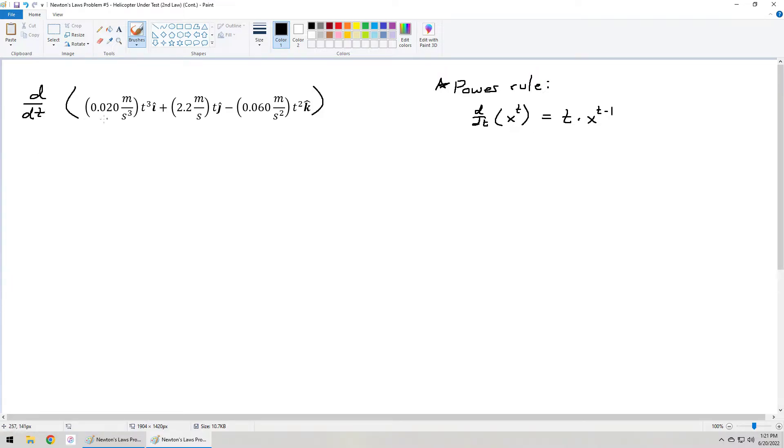It looks like this. If you take d over dt of x to the t, we end up getting t times x to the t minus 1. That's the only thing that we're going to use in this problem whatsoever. There's no further complicated calculus rules going on here. So if I take the derivative of this expression with respect to t, I'll write out kind of the full thing on the first line, and then going forward, I'll just kind of write it shorthand.